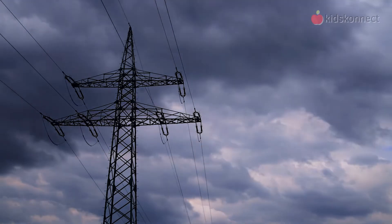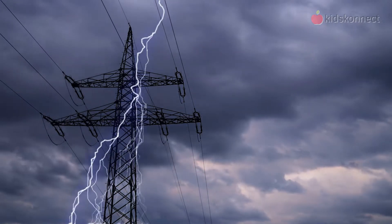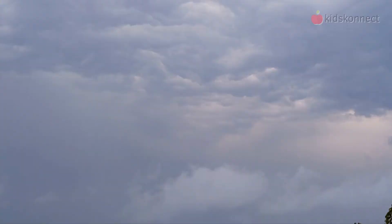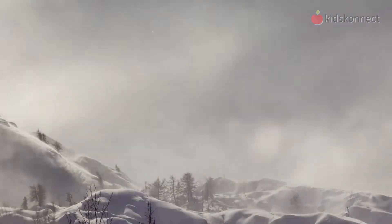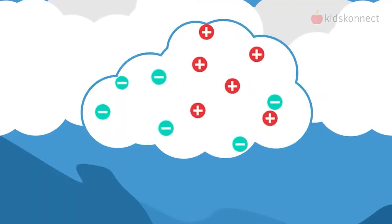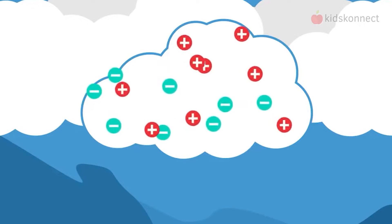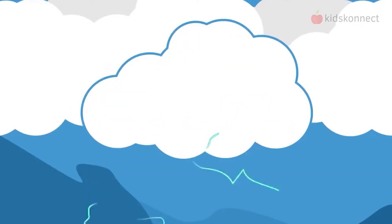Did you know that electricity occurs in nature? Lightning forms from a charge created by friction when millions of tiny ice particles collide with each other in the cloud. This friction creates charged particles, and when the charge becomes large enough, a lightning strike occurs.